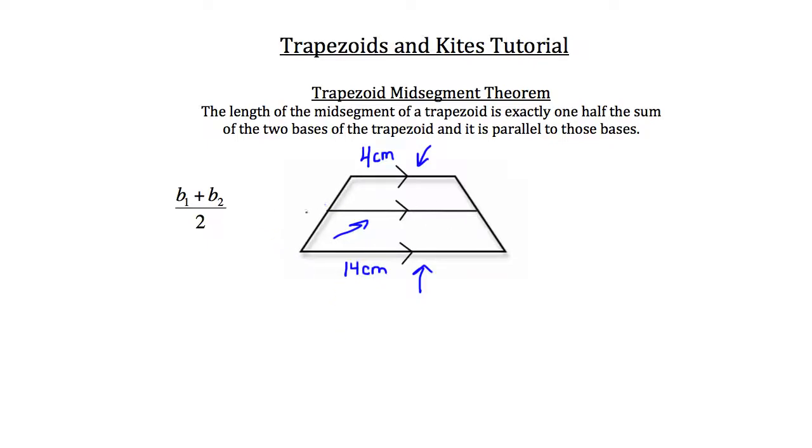Well you would know that you would just add those two bases together, 4 centimeters plus 14 centimeters, and divide that by 2. 4 plus 14 is 18, and 18 over 2 is 9. So our mid-segment would have a length of 9 centimeters.